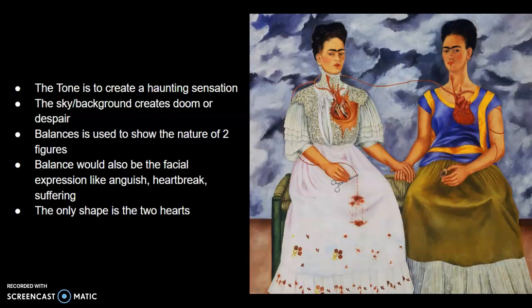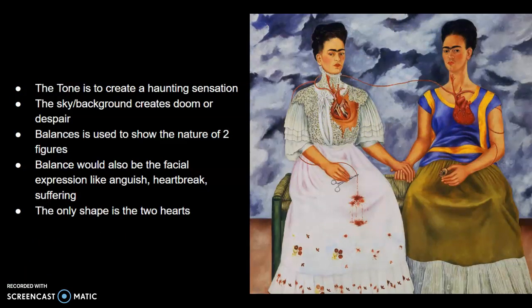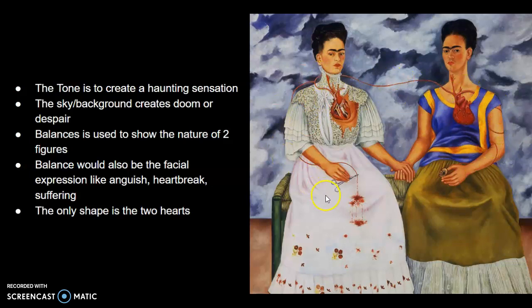The two shapes in this picture are the two figures. Also, the lines being used in this image are directional lines — the lines that are connected to both figures from the heart. These lines connect to the focal point, which is the heart.